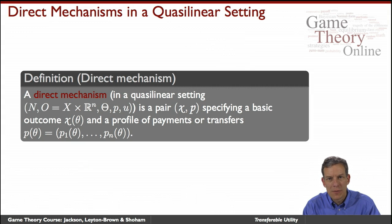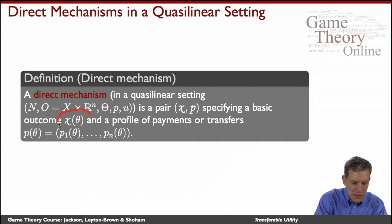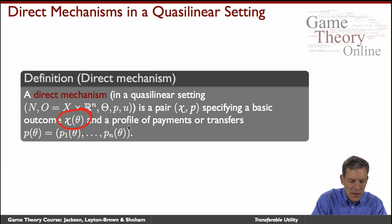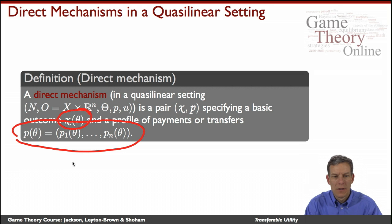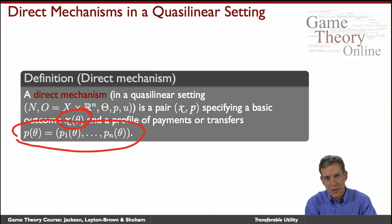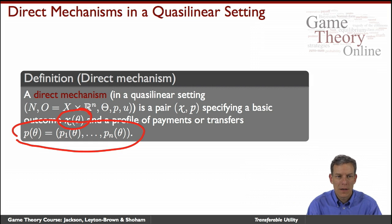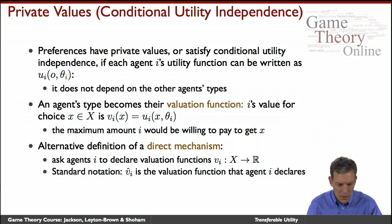A direct mechanism in this world is going to be a combination of some choice X(θ) which comes out of X, and a payment scheme as a function of the θ's. Agents announce their θ's, and society returns a public decision — the non-monetary decision — and then a list of transfers or payments that each agent is going to make.